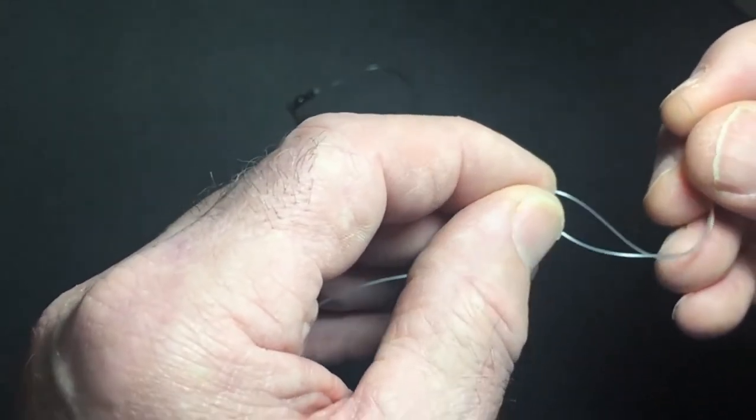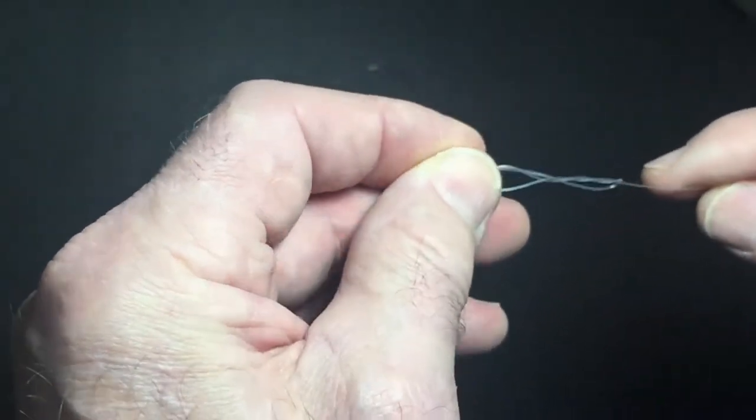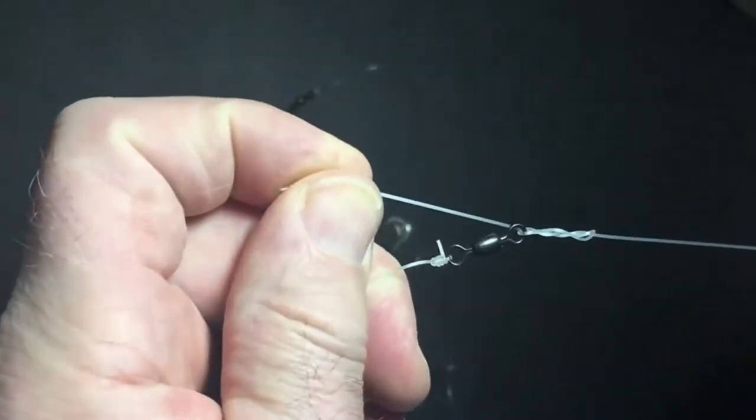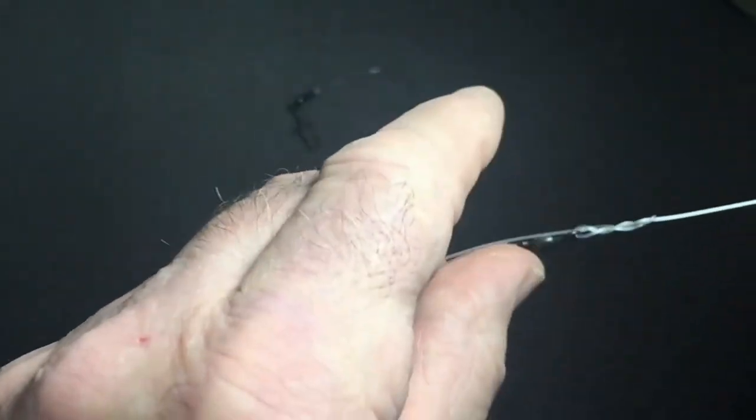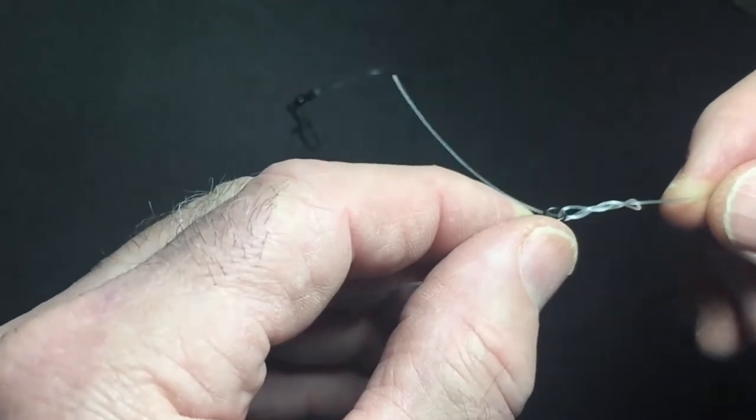So we got three twists and now we're just going to take our tag end, we're going to put it through the loop. And now we're going to give it a little bit of a pull here, but we don't want to go all the way because without lubricating that knot it'll be weak. So let's lubricate that knot.